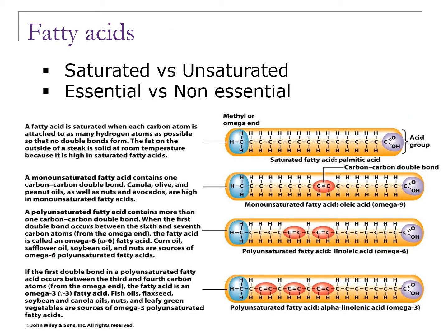Now let's take a closer look at the fatty acids. Fatty acids can either be saturated or unsaturated. A saturated fat is one that is completely saturated with hydrogens, meaning that every carbon has as many hydrogens attached as possible. This also means that there are no carbon-to-carbon double bonds present. Saturated fats are most often solid at room temperature.